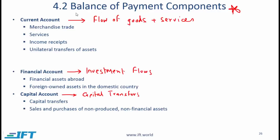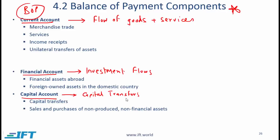Section 4.2: Balance of Payment Components. BOP has three components: the current account, the financial account, and the capital account, and each of these major components has sub-accounts. The current account deals with the flow of goods and services. The financial account deals with investment flows, and the capital account deals with capital transfers.